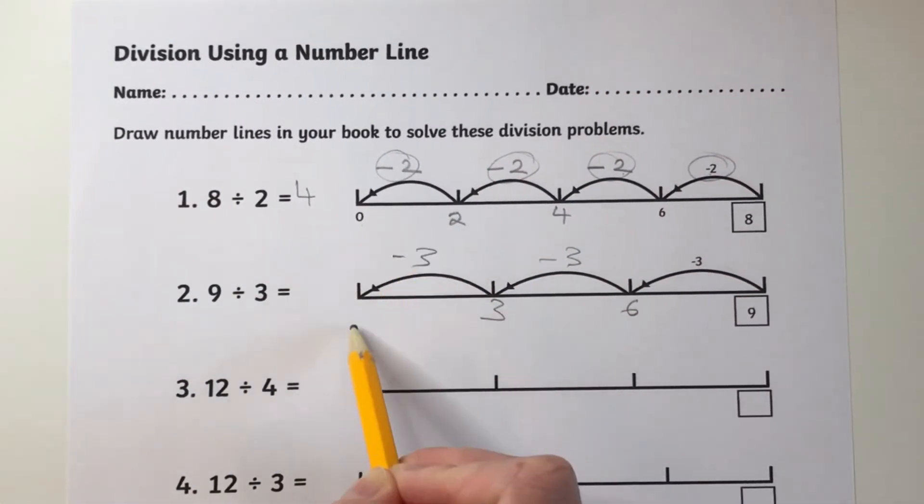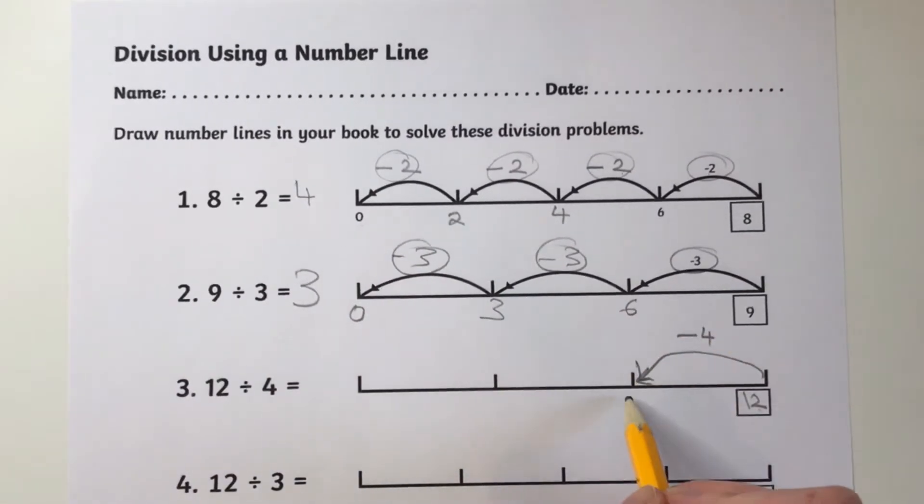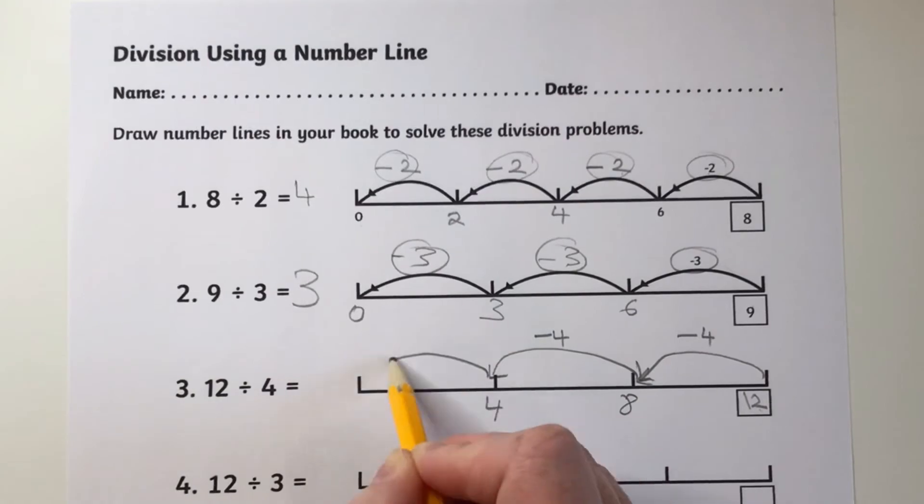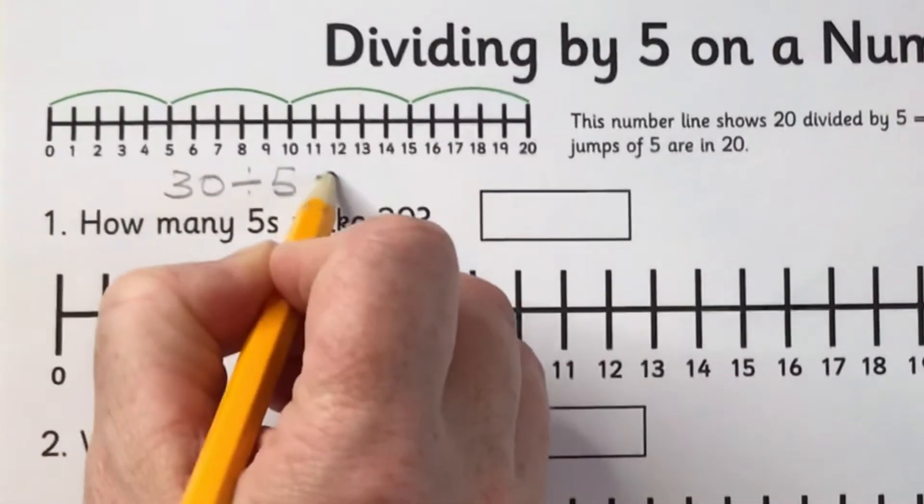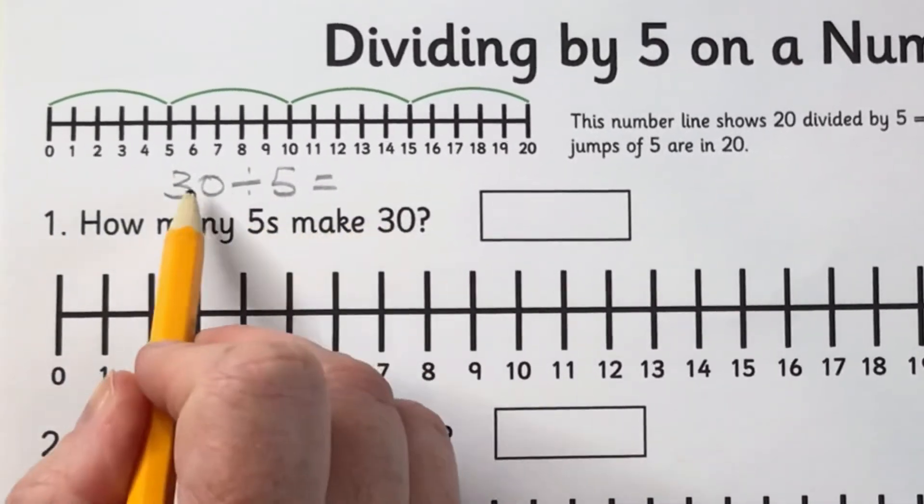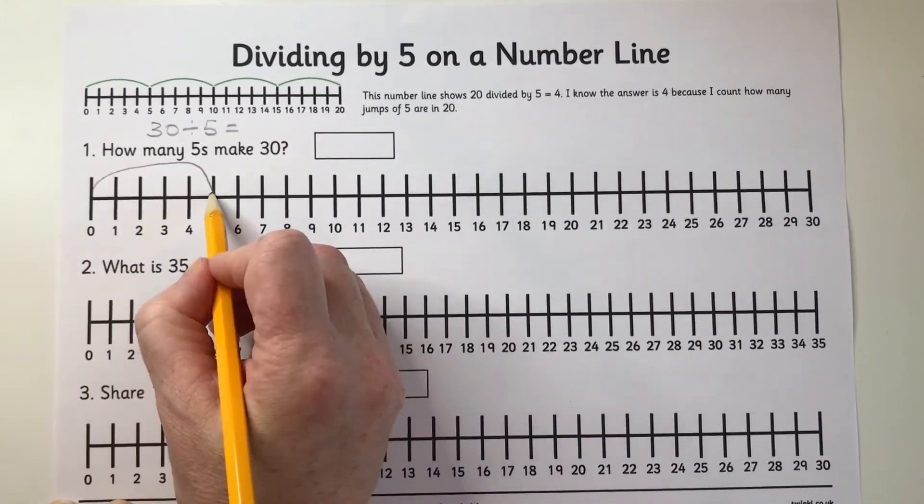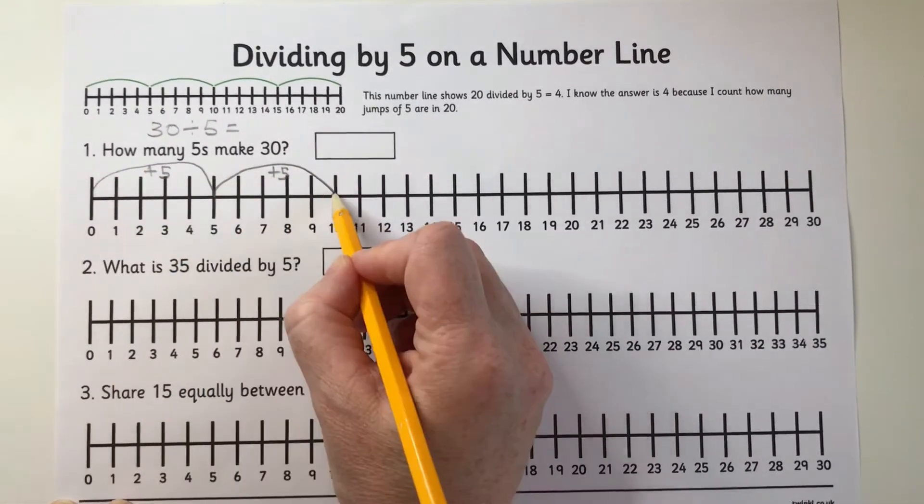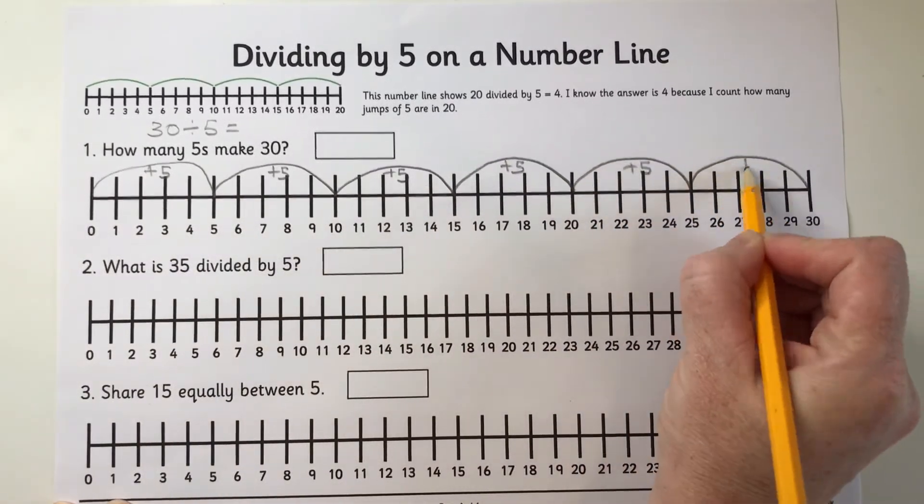And each time you count the number of jumps to get the answer because you're finding how many groups of two, three, or four are in the larger number. Again, it's the same idea when jumping up on a number line to find how many groups of 5 make 30 in this example. So 30 divided by 5 equals 6 because there are six groups of 5 in 30.